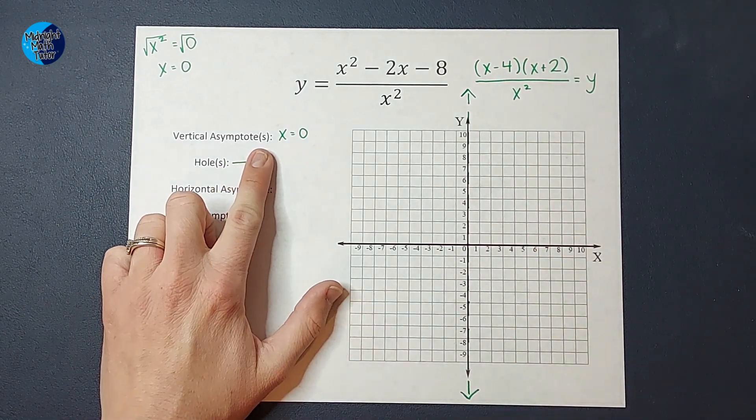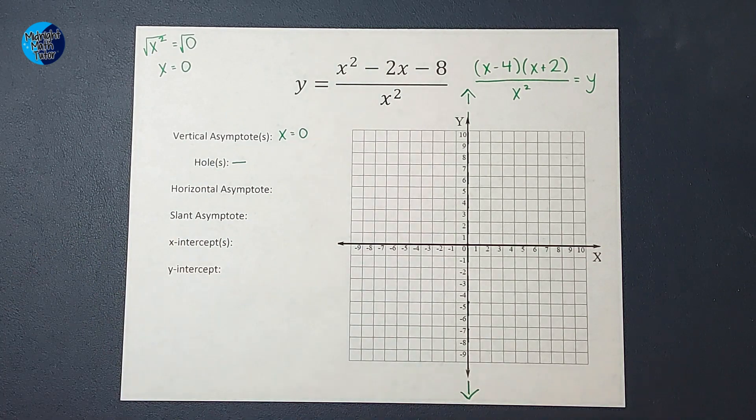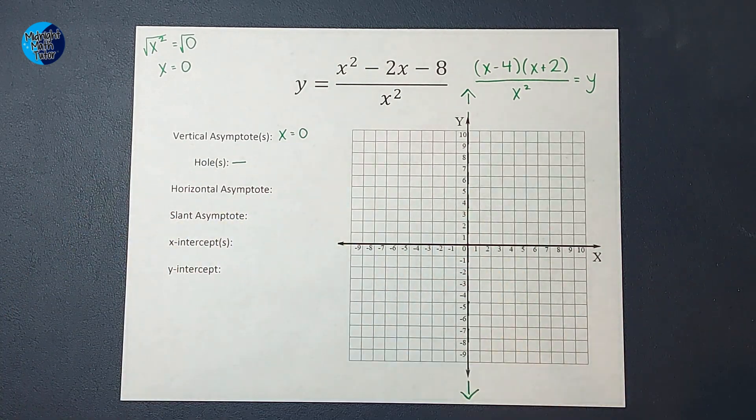Now you'll notice there is an S in parentheses here. You will sometimes have more than one vertical asymptote, but in this example we just have one.